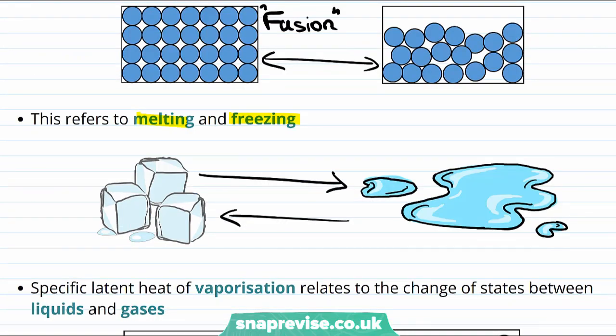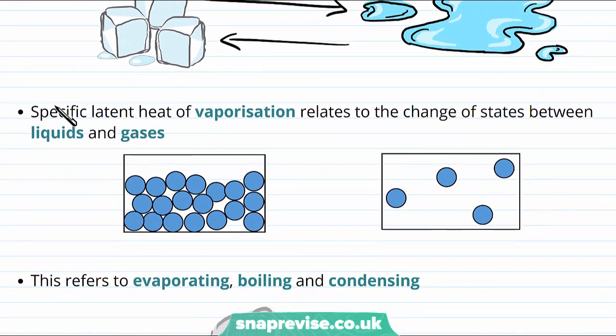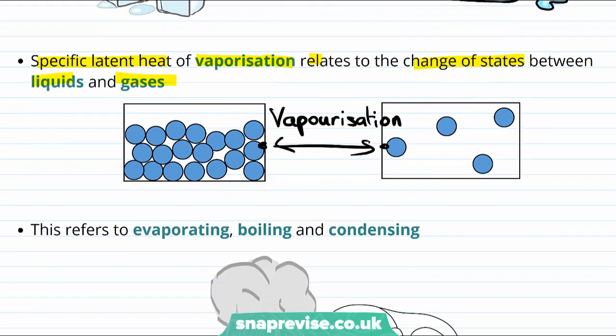Moving on to changes between liquids and gases, it's the specific latent heat of vaporization that relates the changes of states between liquids and gases. So vaporization covers going from liquid to gas, which you may know as evaporating or boiling, and also going from gas to liquid, which you might know as condensing.